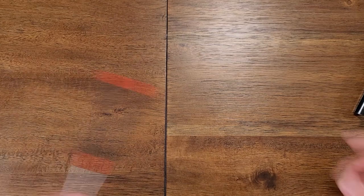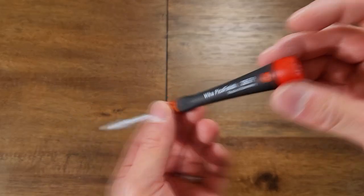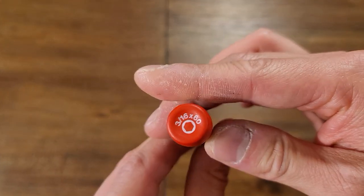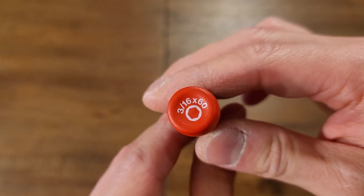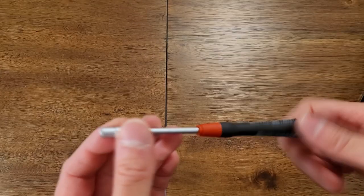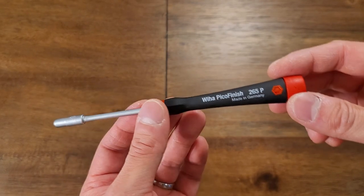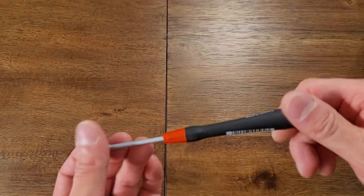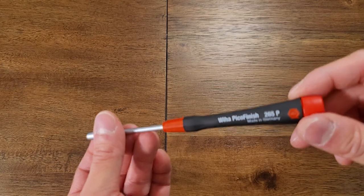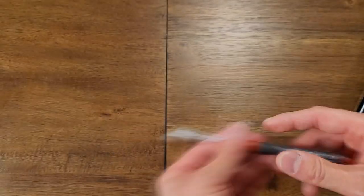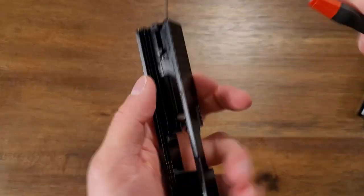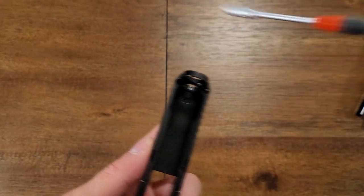To be unscrewing the front sight we're going to be using a 3/16th hex tool. You can use one that's dedicated for Glocks or you can use one that you happen to have around the house. This one I got from Amazon. I'll be linking all the products that I use in this video in the description. So let's go ahead and unscrew the front sight with our hex tool.